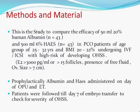On the day of hCG trigger, E2 levels were more than 3,000 picograms per ml in both groups and the number of follicles was more than 15. On ultrasound, there was presence of free fluid around the ovaries and in the pelvis, and ovarian size was more than 7 centimetres. Prophylactically, albumin and HAES were administered on the day of oocyte pickup and embryo transfer. These patients were followed until day 7 of embryo transfer to check for severity.